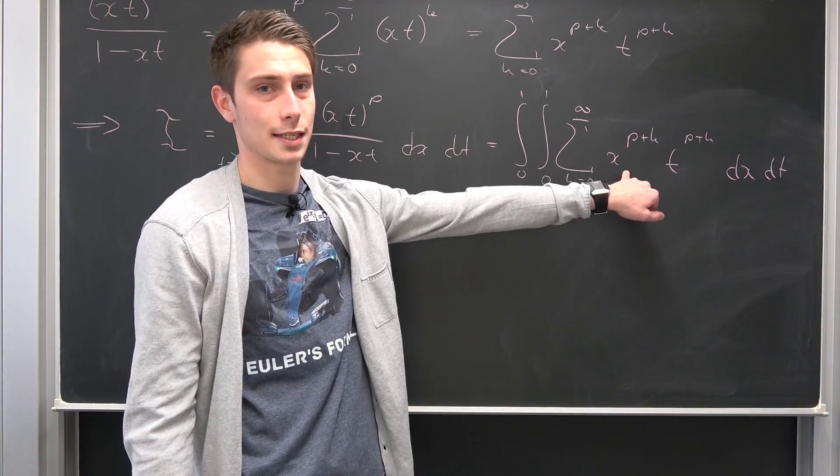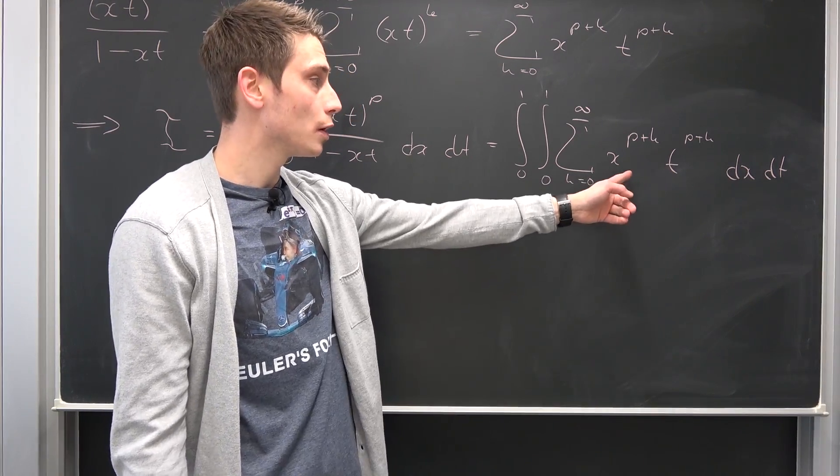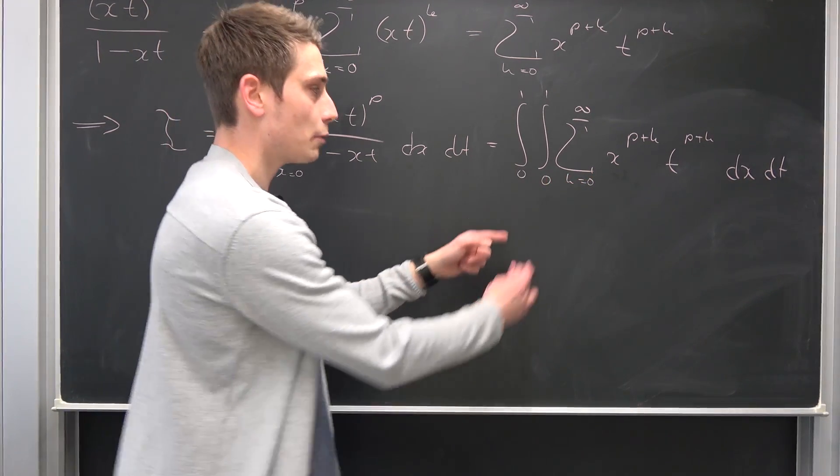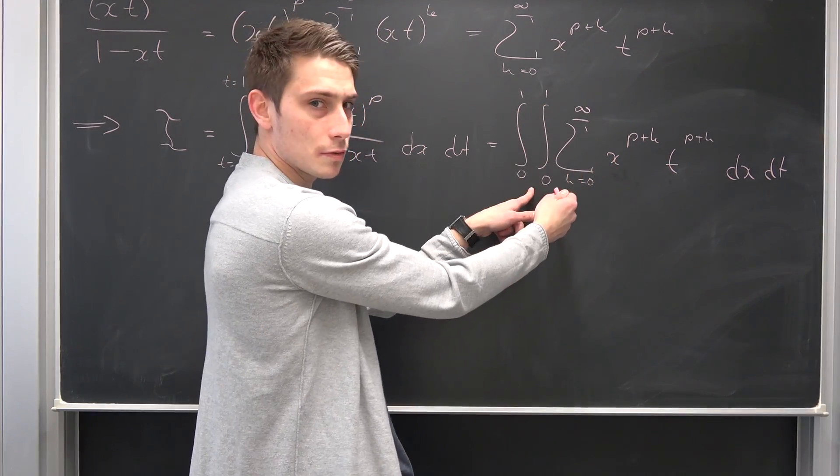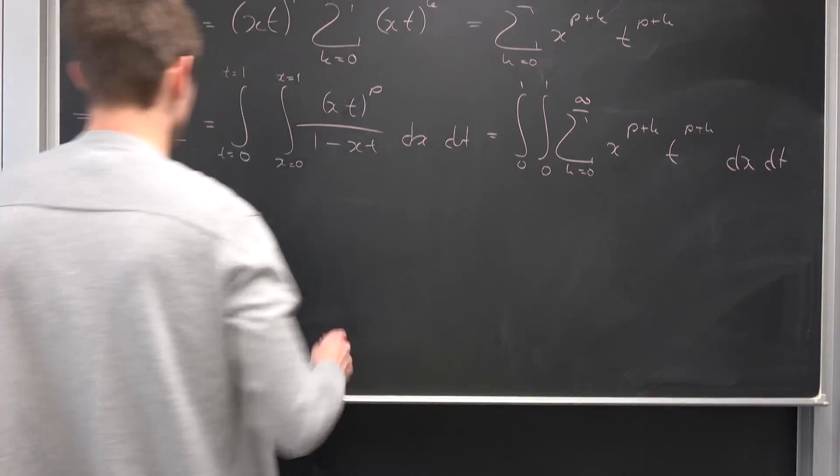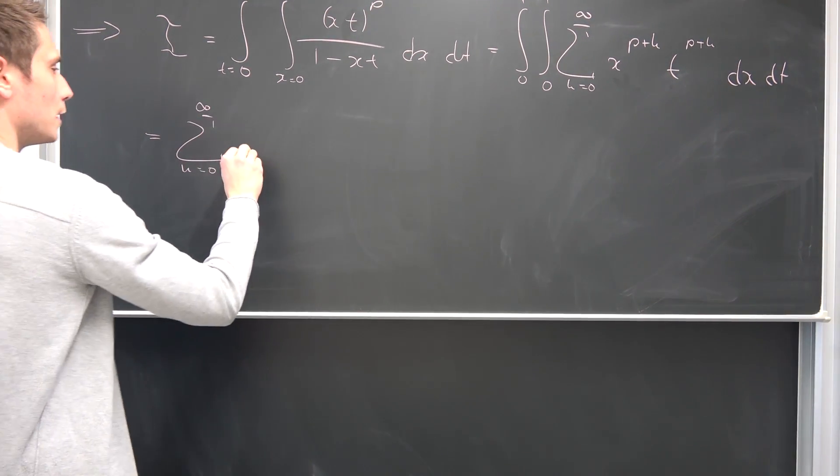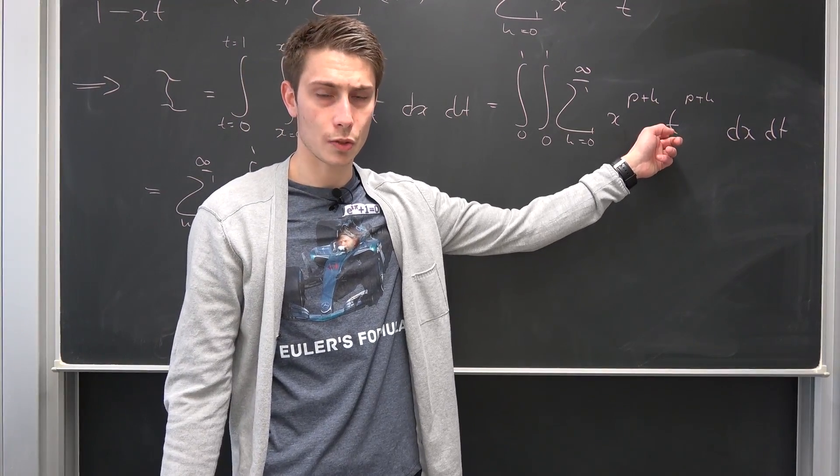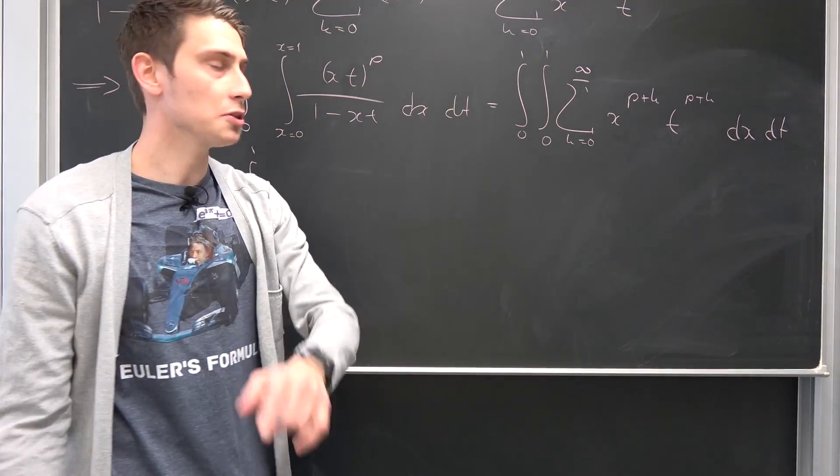The integrand right here is strictly positive all the damn time on x, meaning we can actually use Papa Fubini to interchange this limit and this limit. Namely sum and integral. Then we have the sum in between those integral signs. Same argumentation here: t is strictly positive all the time on this interval. So let's interchange this sum also with this integral, meaning we can bring this whole sum to the outside.